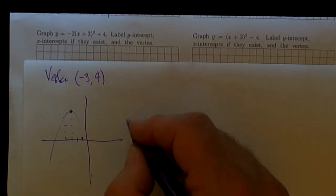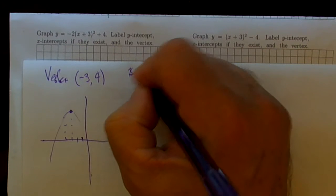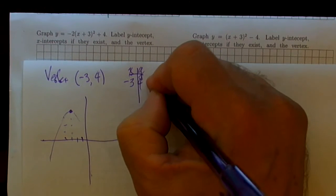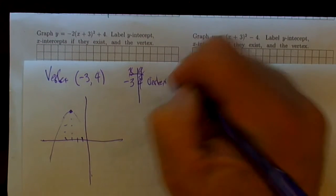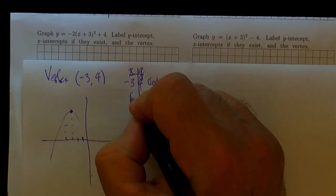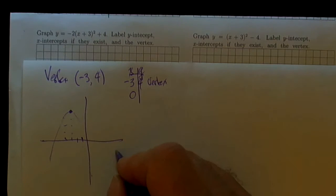We can also ask the question, so let's keep track of what points we know already. Negative 3, 4 happens to be the vertex. We can ask the question, where is the y-intercept, or what happens when x is equal to 0?